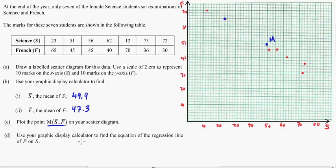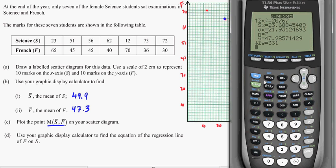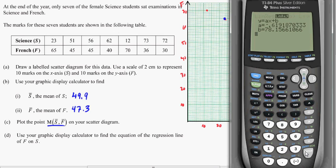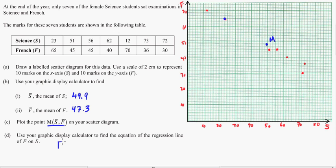So now it says use your graphic display calculator to find the equation of the regression line of F on S. No problem. So we'll just go back to the calculator. We already have everything entered in. So again, we'll go back to stat. We'll go to calculate. And this time, instead of two variable stats, we'll just go down to linear regression. And that's going to give us L1, L2. It's good to enter your list in L1 and L2, because then you never have to change this stuff. Calculate. And we have AX plus B. So A is the slope, and B is the y-intercept, or A is the gradient, B is the y-intercept. So negative 0.619 plus 78.2. So F is the y here. We've got to put it in terms of F and S. So F equals negative 0.619 S plus 78.2. So that's our linear regression line right there.